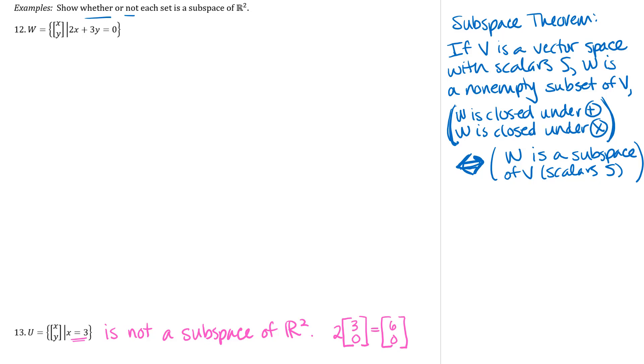So then I'm just saying here for my scalar 2 and my vector (3,0) that is in this set U, that 2 times (3,0) is not in the set U. So I've used this symbol here, not an element of U. So the scalar multiplication closure does not hold. So we can say that U is not a subspace of R².